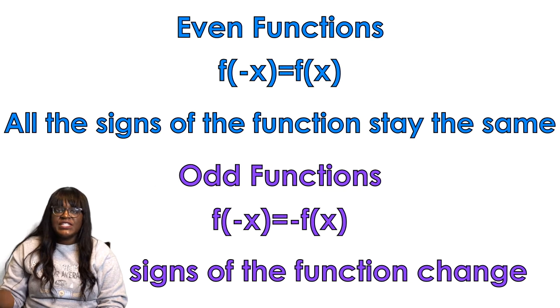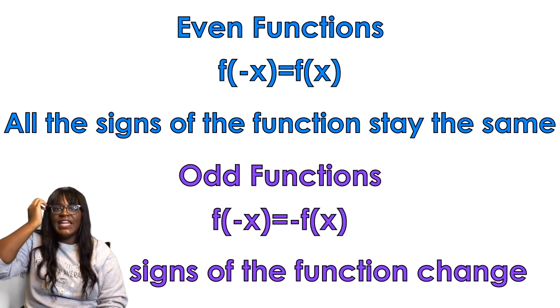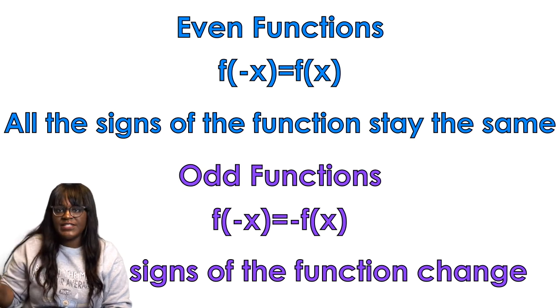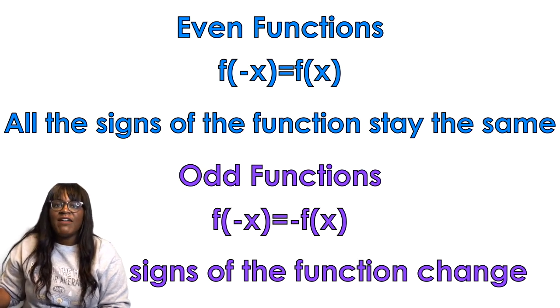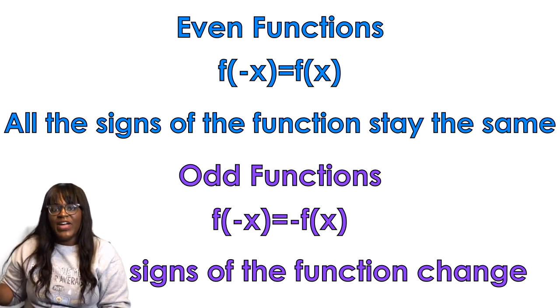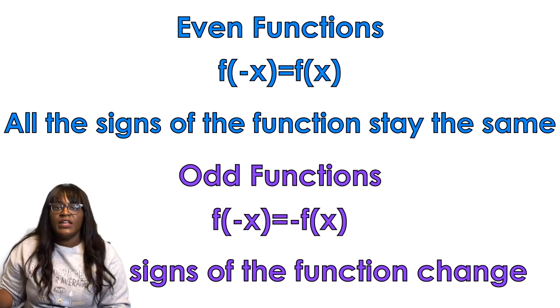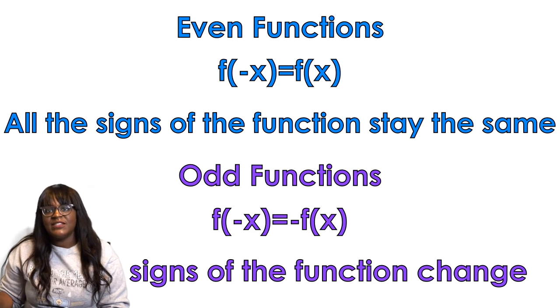So you have even functions. You figure them out if you plug in negative x into the function and it comes out the same. So f of x stays the same. And then you have odd functions that if you plug in negative x, all the signs change.